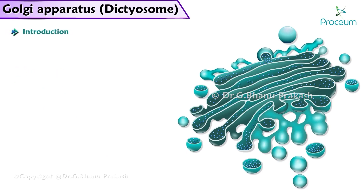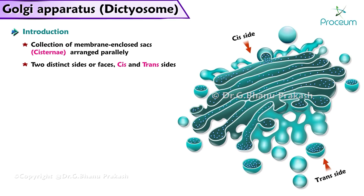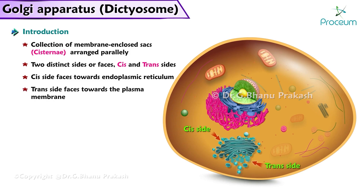The Golgi apparatus is a collection of membrane-enclosed closed sacs, or cisternae, that are arranged in parallel formations like dinner plates. The Golgi apparatus has two distinct sides, or faces. They are the cis side and the trans side. The cis side faces towards the endoplasmic reticulum, while the trans side faces towards the plasma membrane.